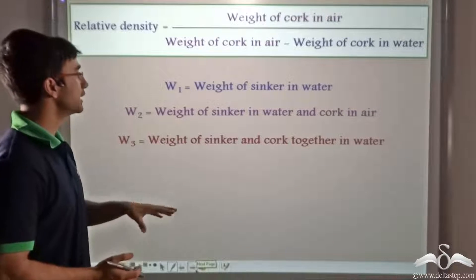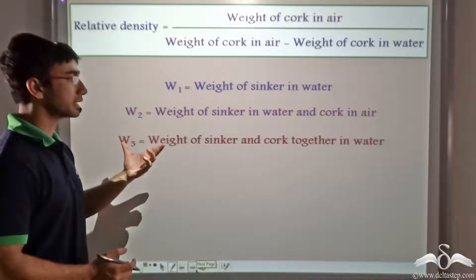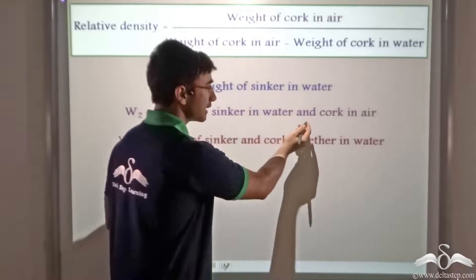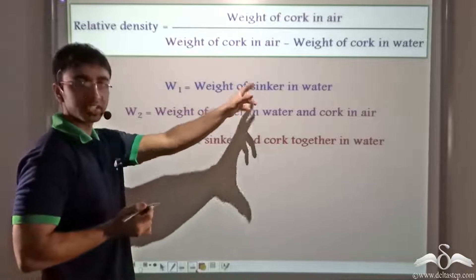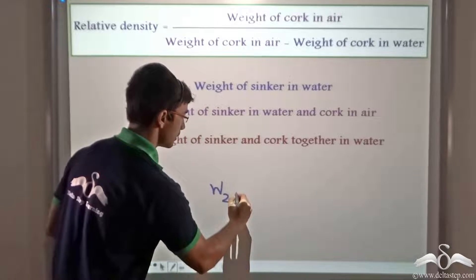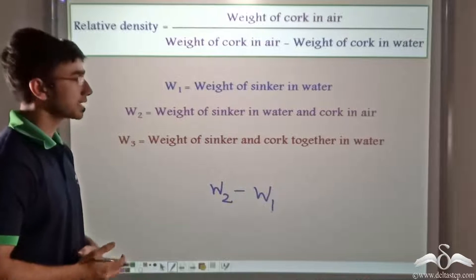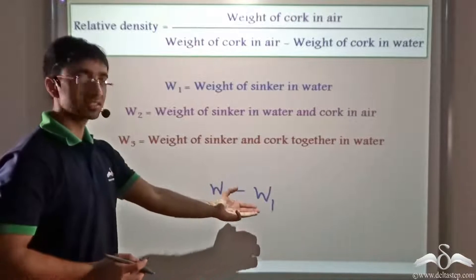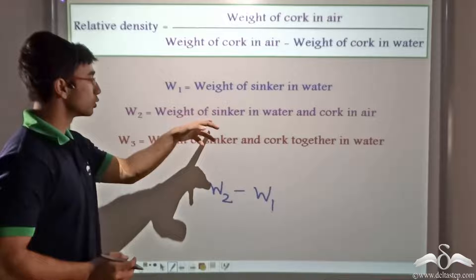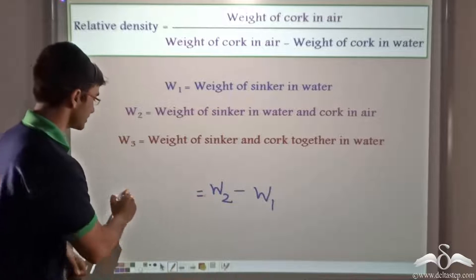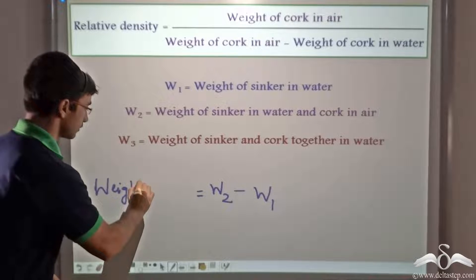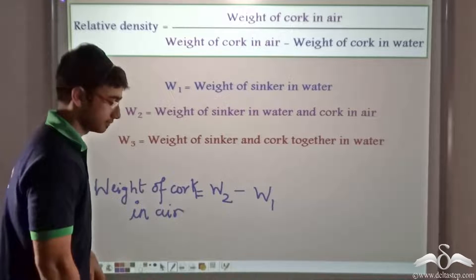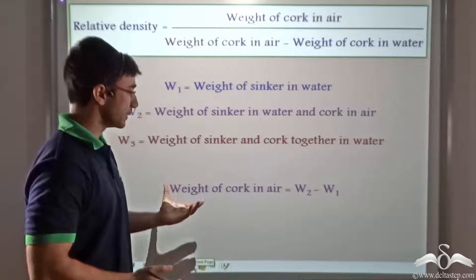From the experiment the values W1, W2, and W3 will be used to calculate the weight of cork in air and the weight of cork in water. If you look closely, W2 is the weight of sinker in water and cork in air, and W1 is the weight of sinker in water. So W2 minus W1 eliminates the common term — sinker in water — leaving us with the weight of cork in air.